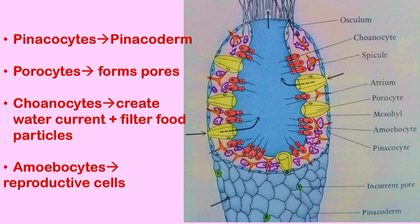Only four basic types of cells are involved in the formation of a sponge. Pinacocytes form the pinacoderm, which is the outer surface of the sponge body. Porocytes form the pores, which allow the inward flow of water.